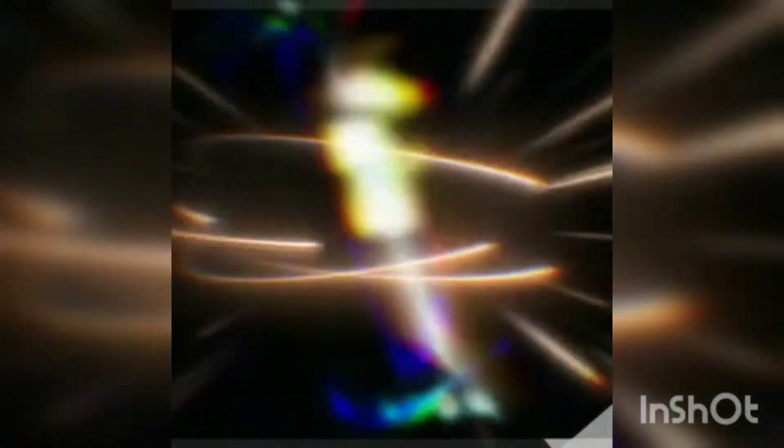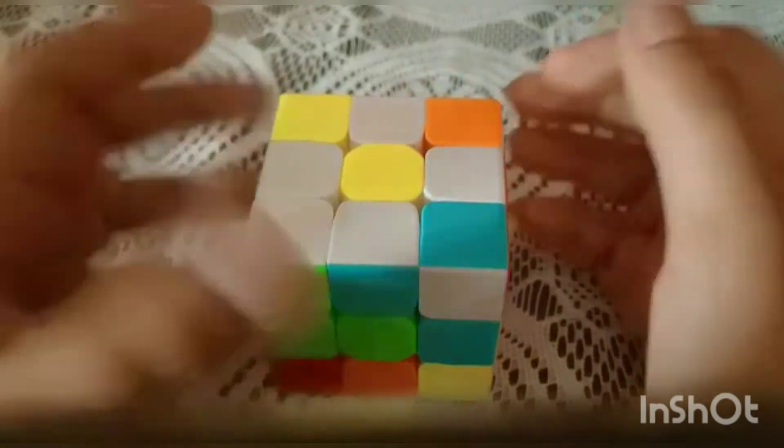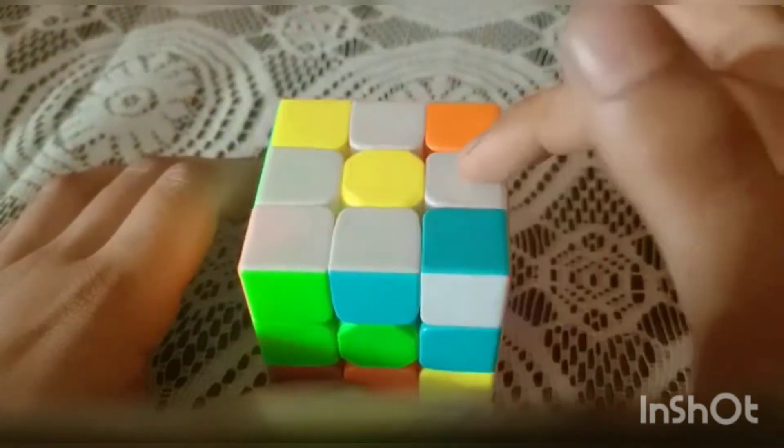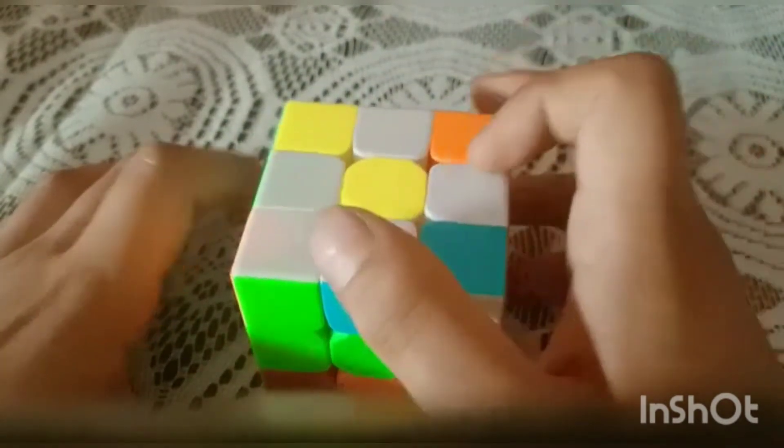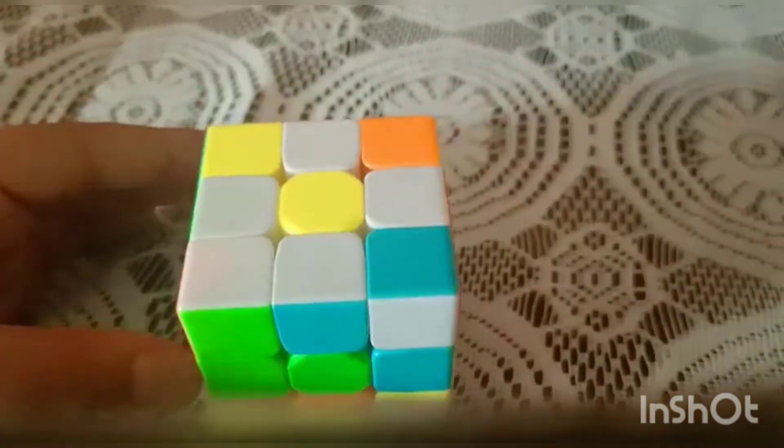So let's start this video without wasting time. In this video we have to do step one, and step one is to make a white plus with a yellow center, which I have done already. So first, let me jumble this cube and then we'll start with step one.